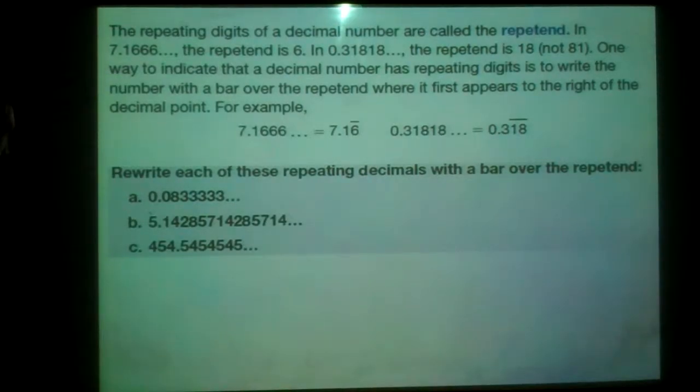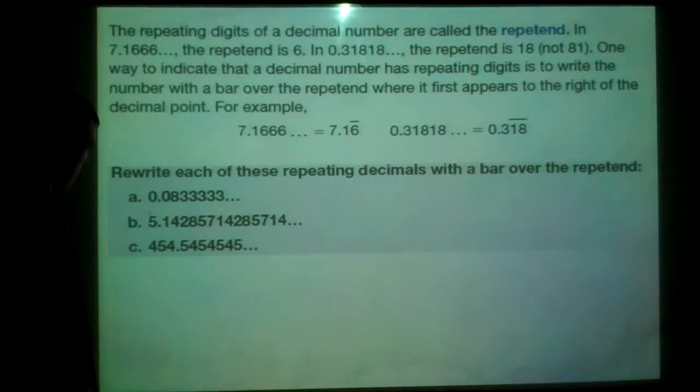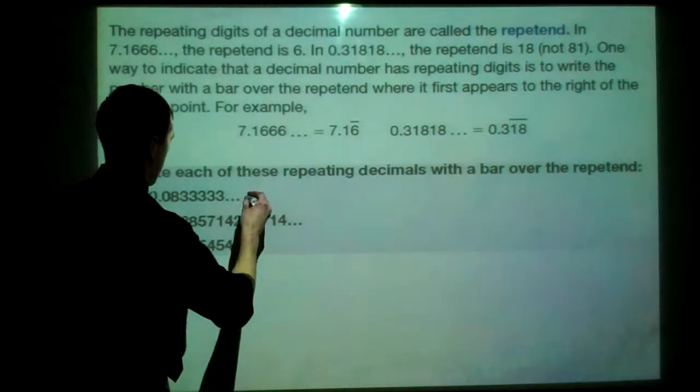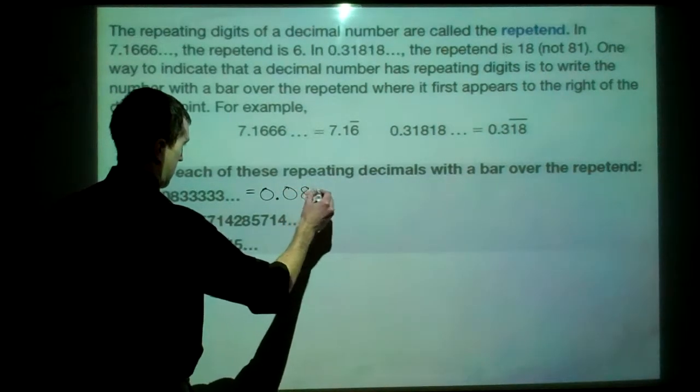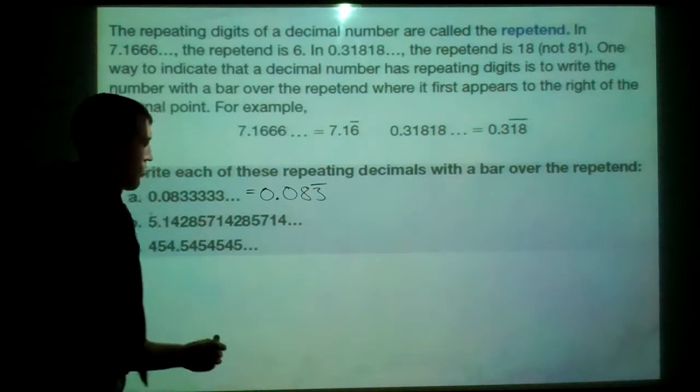Let's rewrite each of these quick here. It says rewrite each of these repeating decimals with the bar over the repetend. So what seems to be repeating? Well, the 3 does. So, I'm going to say this equals 0.083 with the bar over the 3.